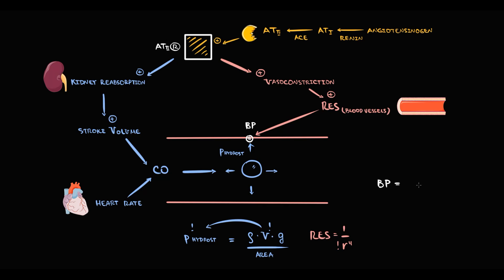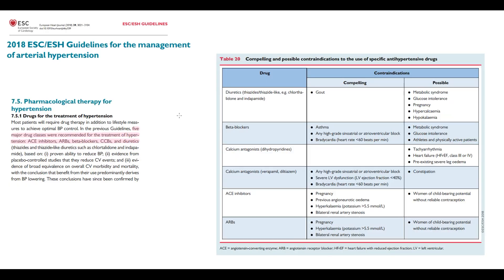To summarize, blood pressure is determined by two factors: cardiac output and blood vessel resistance. Cardiac output is determined by stroke volume and heart rate. According to current guidelines, there are five major drug classes recommended for hypertension treatment: thiazide diuretics, beta blockers, calcium channel blockers, ACE inhibitors, and angiotensin receptor blockers.